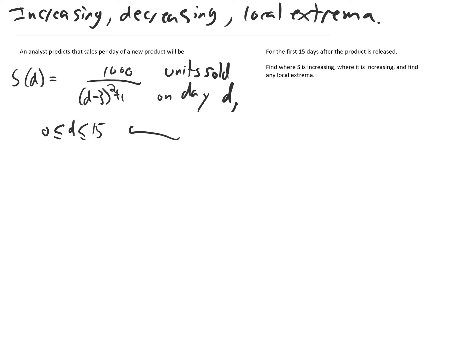So this is the domain. Prediction only holds for the first 15 days after the product is released. We want to find where S is increasing, find where it's decreasing, and find any local extrema, meaning maxes or mins.